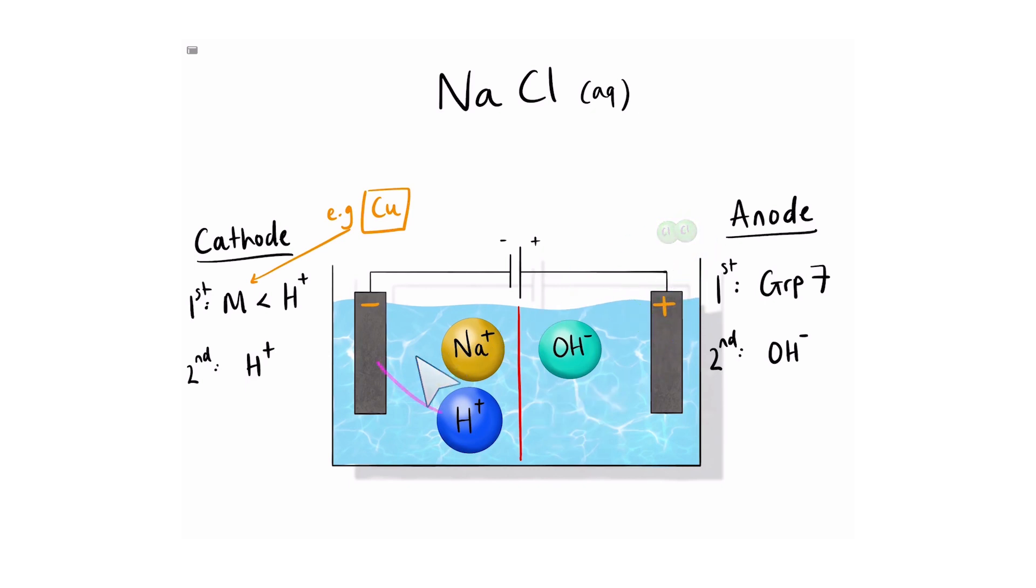At the cathode, we have sodium ions and hydrogen ions. Now remember, we don't have copper. Therefore, sodium must be more reactive than hydrogen. Because the only metal that is less reactive than hydrogen is copper. Sodium is more reactive than hydrogen. Or in other words, since sodium is not copper, it does not take first priority. Therefore, hydrogen goes to the electrode. Hydrogen therefore goes to the cathode and forms hydrogen gas.